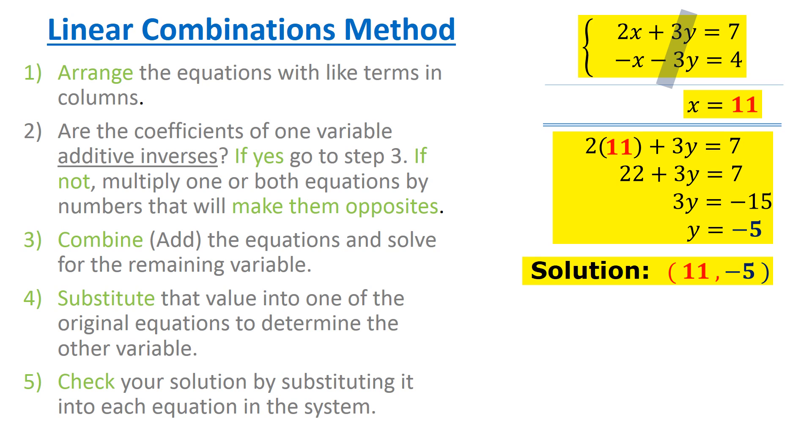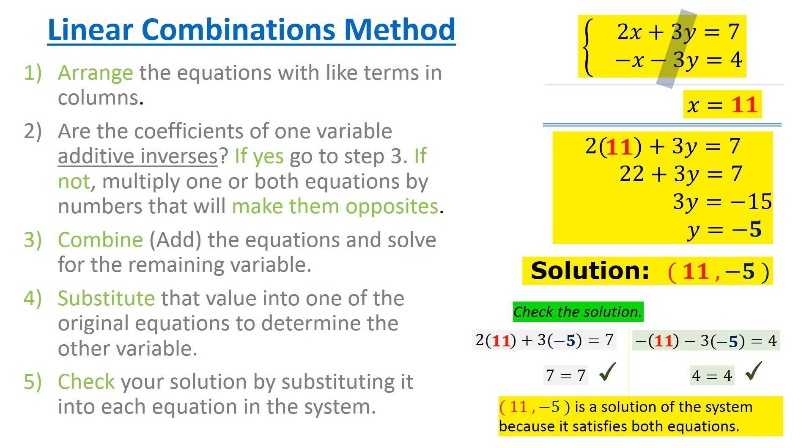Step five, check your solution by substituting it into each equation in the system. So it's very important that you use parentheses when you substitute. So we get for the first one, 7 equals 7, which means that it does work out. But you also have to make sure to check it in the other equation. And when you use order of operations on each side, we get 4 equals 4. That works out as well. The conclusion is that (11, -5) is a solution of the system because it satisfies both equations.